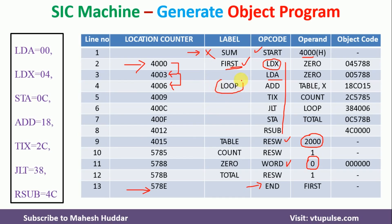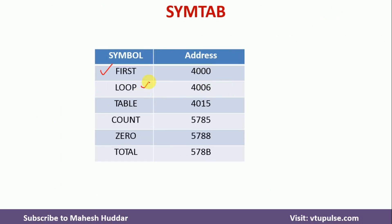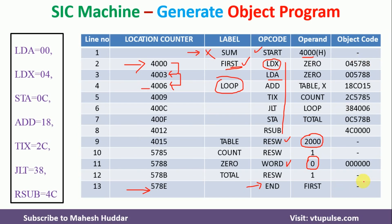After Pass 1, we have assigned a location to each instruction and created the symbol table. For example, FIRST is a symbol with address 4000. Similarly, LOOP is a symbol in the label field, so we add LOOP with address 4006 to the symbol table. This symbol table is essential for Pass 2 — without it, we cannot generate the object codes. The object code and object program are generated in Pass 2. This is Pass 1 assembler: assigning the location counter to each instruction and creating the symbol table.